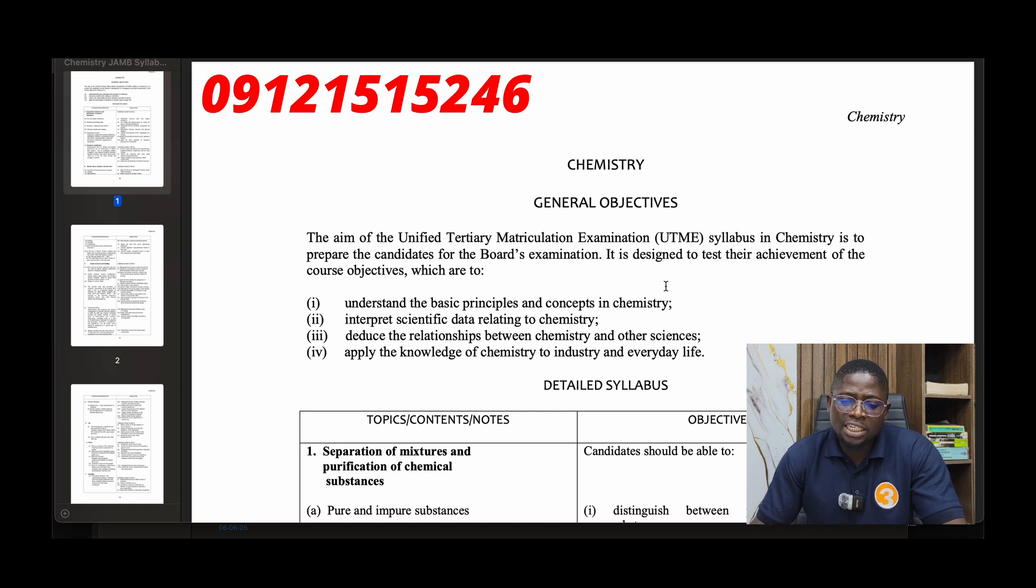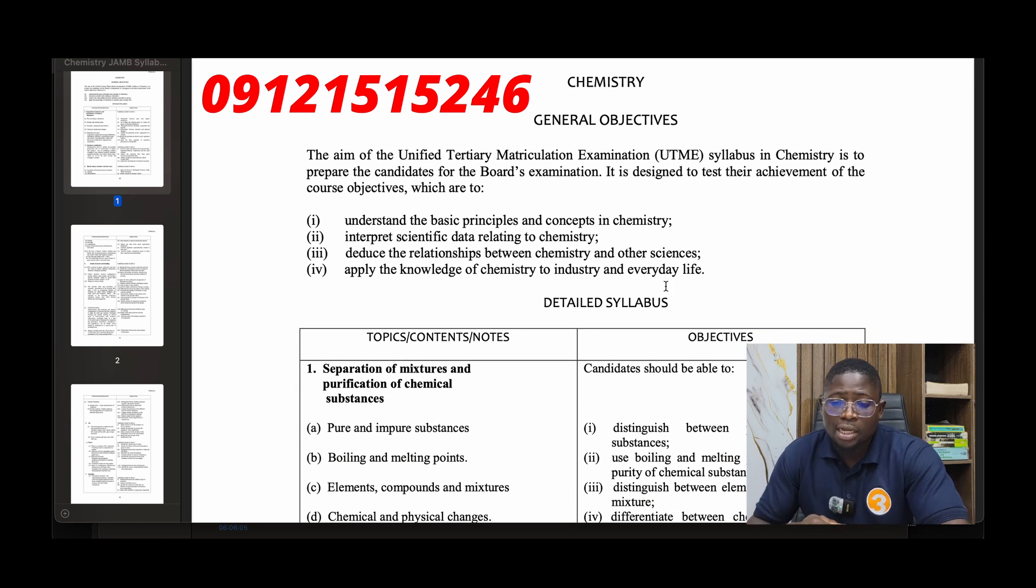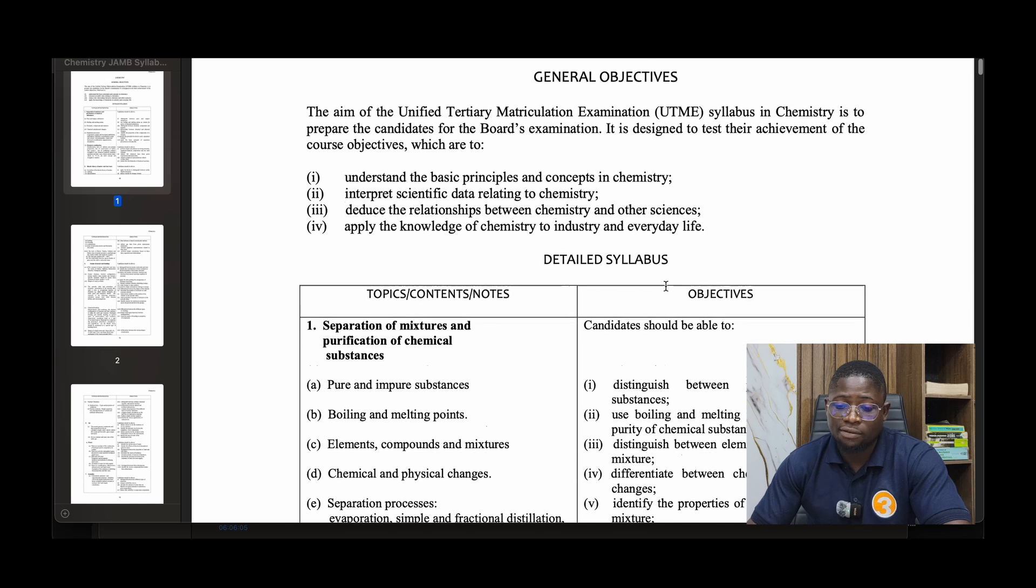The general objectives of the JAMB chemistry syllabus: The aim of the unified UTME syllabus in chemistry is to prepare candidates for the board's examination. It is designed to test understanding of basic principles and concepts in chemistry, interpreting scientific data, deducing relationships between chemistry and other sciences, and applying knowledge of chemistry to industry and everyday life.